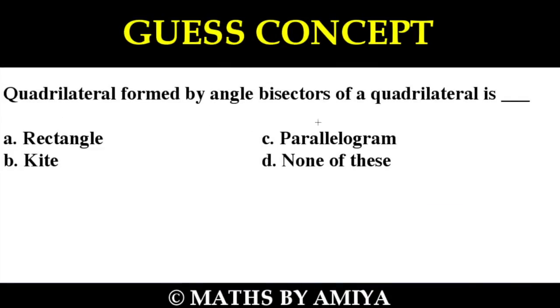So question is, quadrilateral formed by angle bisector of a quadrilateral is what? It's a quadrilateral, not a parallelogram, not a rectangle, it's a general quadrilateral. So there is no condition on the quadrilateral.